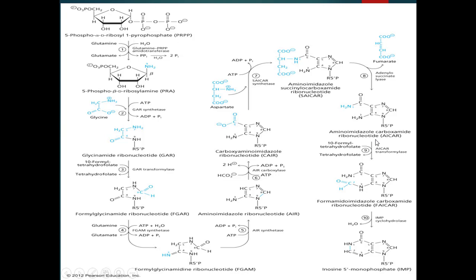After the formation of AICAR, it is then converted into FAICAR or formylaminoimidazole carboxamide ribonucleotide, with the use of the enzyme AICAR transformylase, and formyl-tetrahydrofolate is converted into tetrahydrofolate.